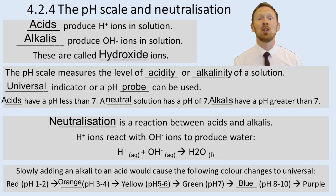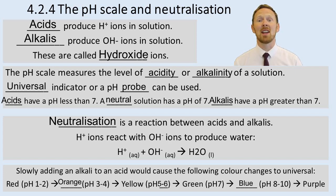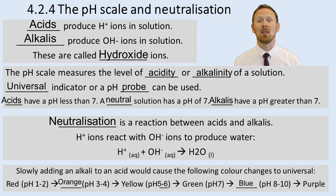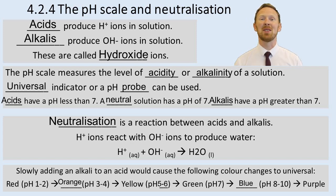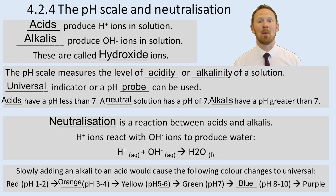This indicator is called universal indicator, but there are others. Phenolphthalein is colourless in acid and pinky-purple in an alkali solution. Methyl orange is yellow in an alkali solution and orange in acidic conditions, though its colour change is not as clear. Phenolphthalein gives a clearer colour change. Make sure you know about these indicators, the pH scale, and neutralisation.